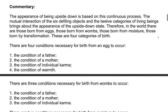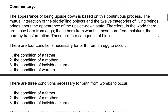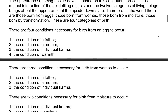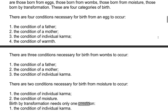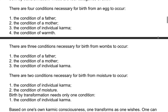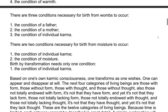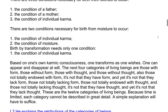There are four conditions necessary for birth from an egg to occur: the condition of a father, the condition of a mother, the condition of individual karma, and the condition of warmth. There are three conditions necessary for birth from a womb. There are two conditions necessary for birth from moisture: the condition of individual karma and the condition of moisture. Birth by transformation needs only one condition: the condition of individual karma.